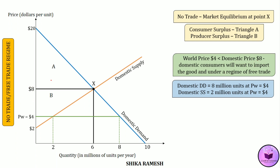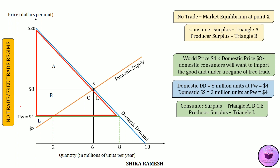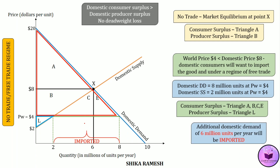We can see a change in consumer surplus as well as producer surplus when compared to a no trade situation. The red triangle represents the consumer surplus in a free trade situation, whereas the small blue triangle represents the producer surplus in a free trade situation. The additional domestic demand of 6 million units per year will be imported. Under a free trade regime, domestic consumer surplus is greater than domestic producer surplus, and there is no deadweight loss. In a no trade situation the consumer surplus was triangle A, whereas in a free trade regime it has increased to triangles A, B, C, and E. The producer surplus, however, decreased drastically from triangle B to triangle L.